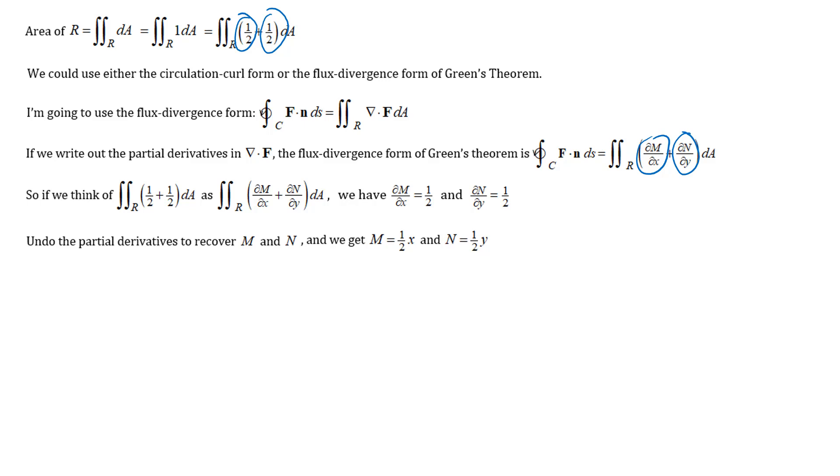So there is my vector field that I have created kind of out of thin air from my original integral that was just the integral of one dA. And so now my task is to basically turn that into a line integral. I've got the line integral with my vector field. We chose to use the flux divergence form so this is my flux line integral.